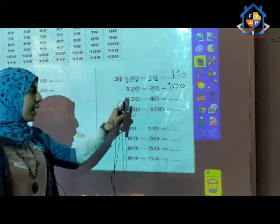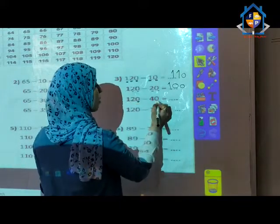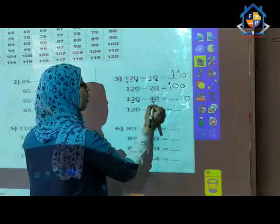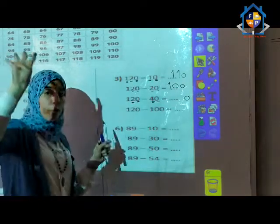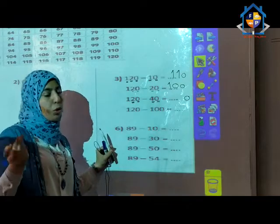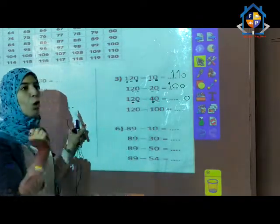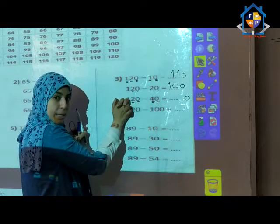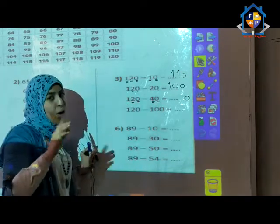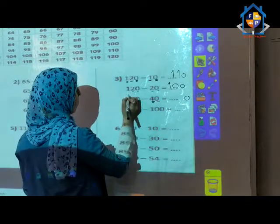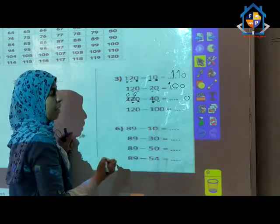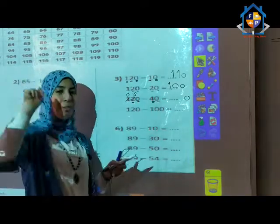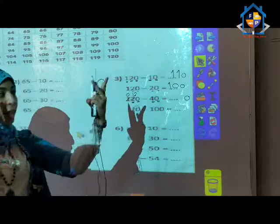In the third problem: 120 minus 40. Start from ones: 0 minus 0 equals 0. Then 2 minus 4 — can I subtract 4 from 2? No, because 2 is smaller than 4. So I borrow from the hundreds place. Knock knock — go to the hundreds place and ask for 1. Kind, the hundreds digit 1 became 0, and 2 became 12. Now I can subtract 4 from 12: count from 4 to reach 12 — after 4, 5, 6, 7, 8, 9, 10, 11, 12 — that is 8. Answer is 80.